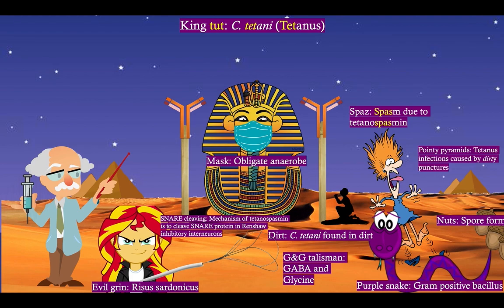Notice the pointy pyramids in the background to remind you that tetanus infections are caused by dirty, sandy punctures. Dirty punctures can be from things like stepping on a rusty nail, which is classic, scraping your arm against some barbed wire, or an old dilapidated car that's been sitting in a junkyard — things like that.